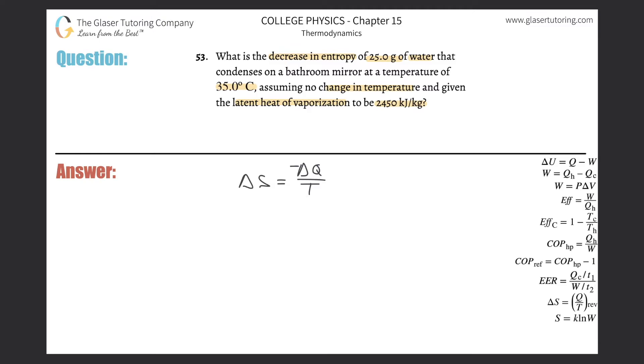Right, I remember the formula: Q is equal to mass multiplied by the latent heat of vaporization or fusion. The heat energy lost to condensation equals the mass of the water that is condensing multiplied by the latent heat of vaporization.